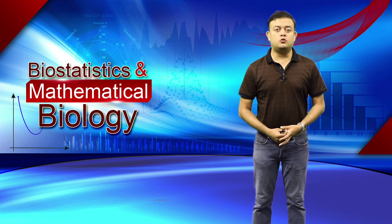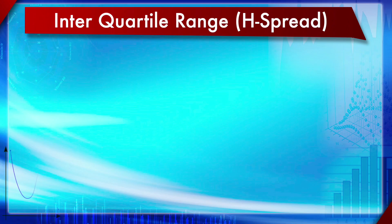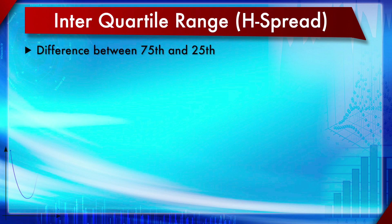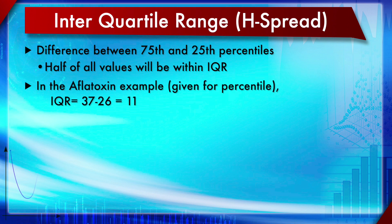Next is IQR, or interquartile range, also called H spread. It is the difference between two quartiles: the upper quartile at the 75th percentile and the lower quartile at the 25th percentile. To calculate IQR, you first calculate the 75th percentile, then the 25th percentile, and subtract the two. The result is the IQR or H spread.